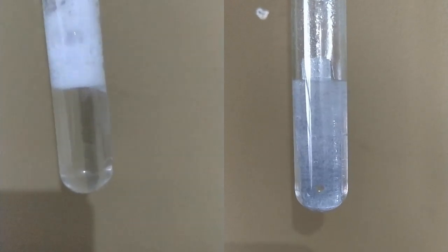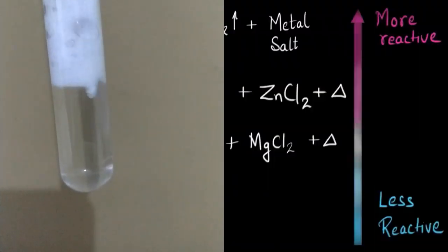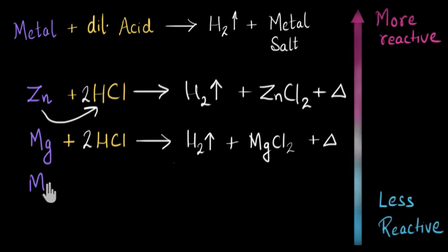I can feel the test tube is much warmer in the case of magnesium than in zinc. So based on these observations, we can say that magnesium is more reactive than zinc. Let's write it down. So magnesium is more reactive than zinc.